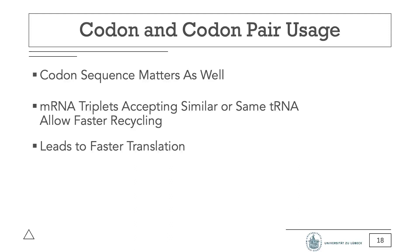A theory for the mechanism is as follows. If a codon triplet and the next triplet in line allow for the same tRNA to bind, the tRNA can be reused more quickly after recycling. The difference in translational speed also has an effect on the genetics. For example, in humans, for the triplet code of the amino acid sequence alanine-glutamic acid, the codons GCA-GAG occur seven times as often as GCC-GAA, even though they encode the exact same amino acids.